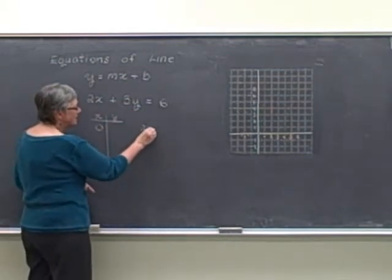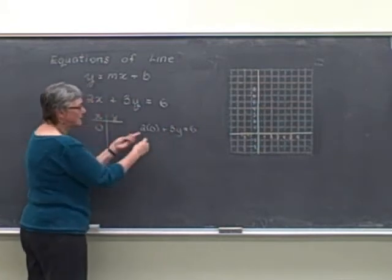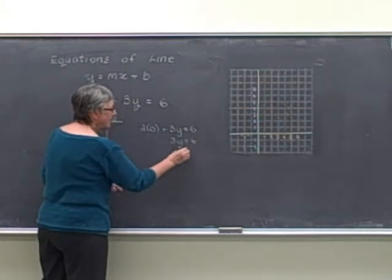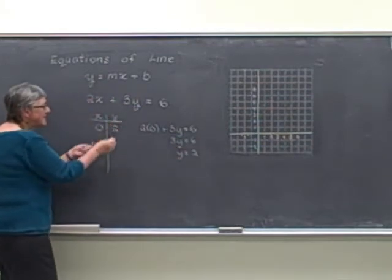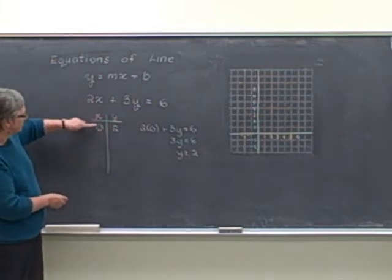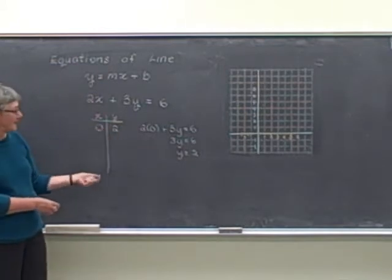We're then looking at the equation 2 times 0 plus 3y equals 6. And 2 times 0 is just 0, so we've got the equation 3y equals 6. And so we can solve for y, y is equal to 2. Now this is the y-intercept again. It's the same point that we found before when our x is 0 and our y is 2. That tells us where we cross the y-axis.